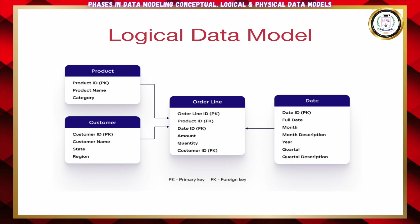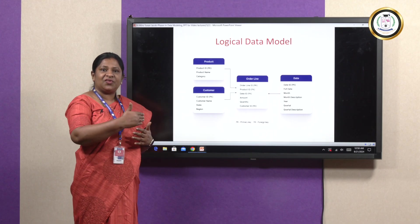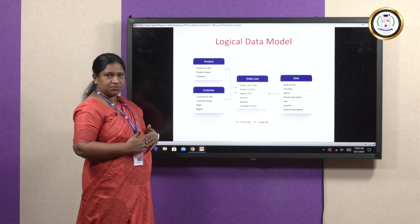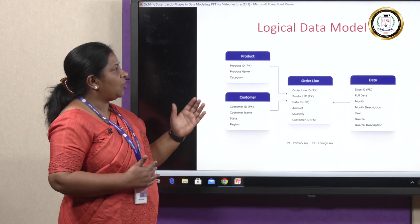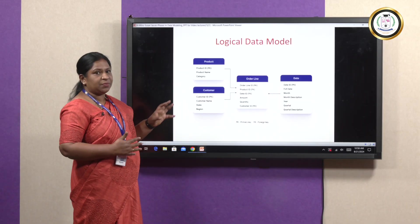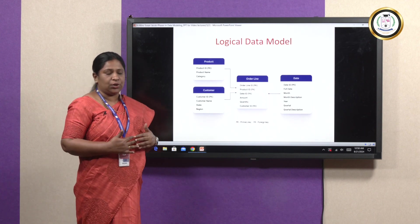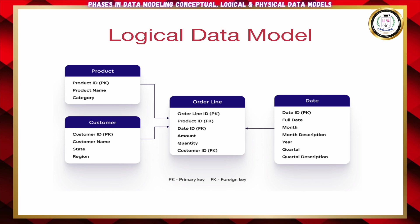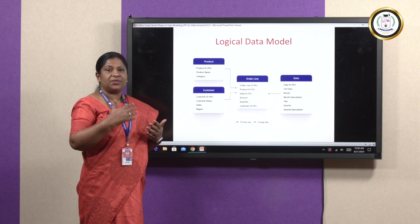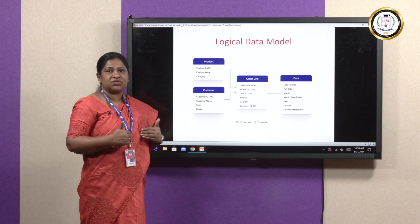Coming to the next phase, which is the logical data model. This development of a data model is an iterative process wherein the output of the first model will be the input for the next model. The conceptual model will be taken into consideration here, and the logical model will be developed or improvised with its help. As you can see in this picture, we have a few more things added — some attributes. For example, the product entity now has product ID, product name, and category.